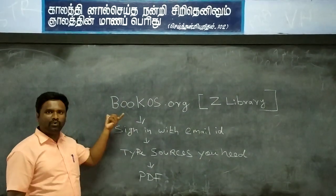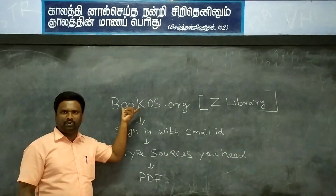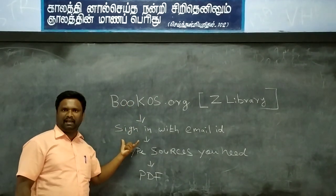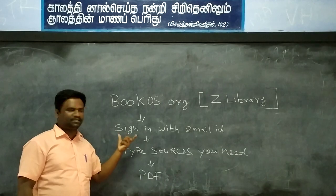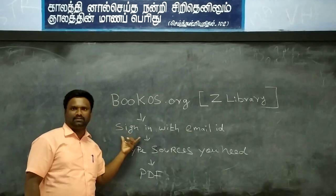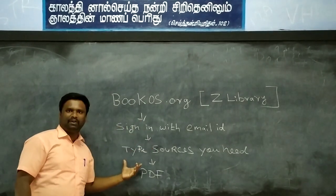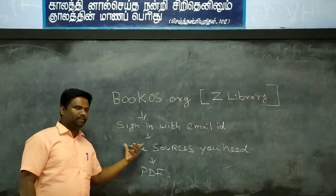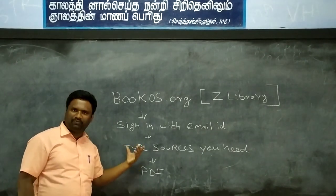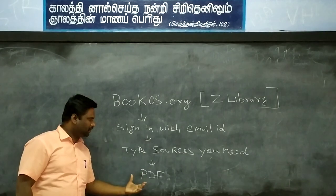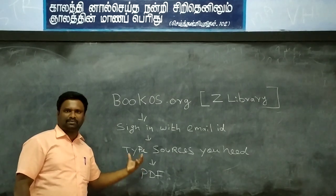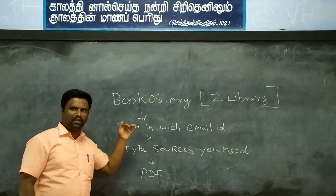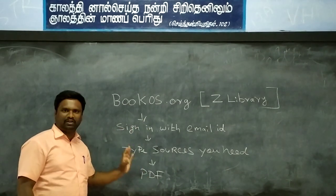Once you type this URL in Google, you will move on to this. With the help of your email ID, please sign in. Next, you will get this page. You have to type the sources which you are looking for. There are many types of downloads — it is better to use PDF. Once you click the PDF, you can automatically download many sources like texts.